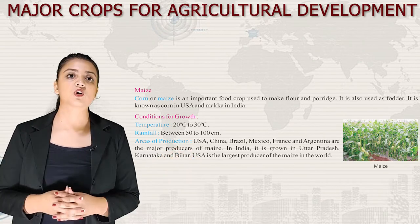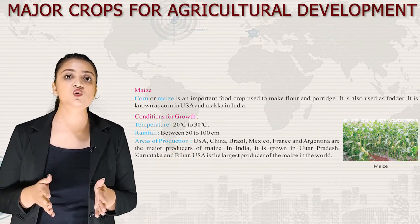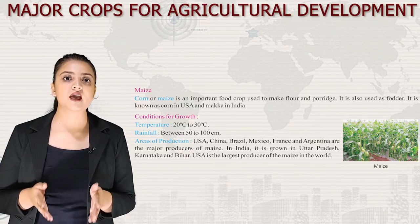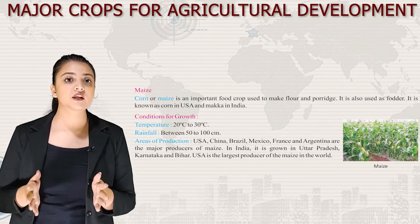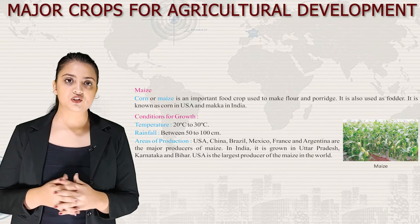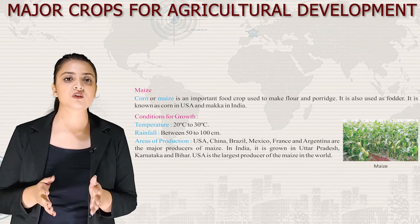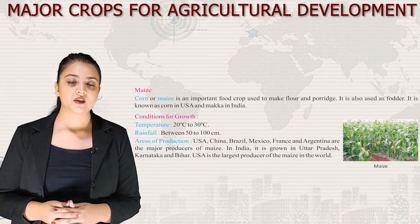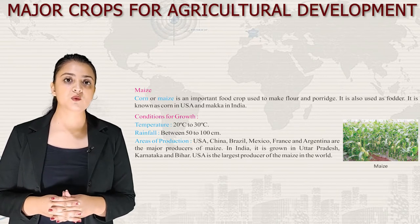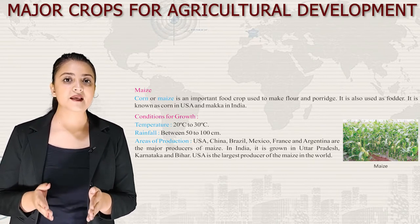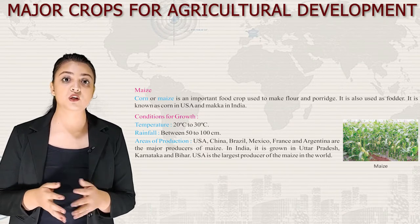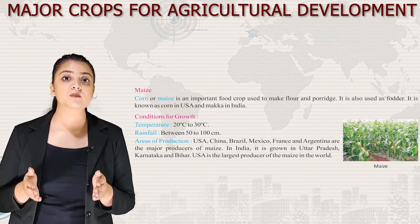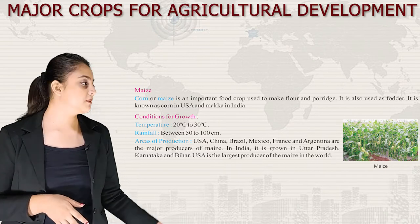Next we have maize. Corn or maize is an important food crop used to make flour and porridge, and also used as fodder. It is known as corn in the USA and Makkah in India. Conditions for growth: temperature 20°C to 30°C and rainfall 50 to 100 cm. Major producers are the USA, China, Brazil, Mexico, France and Argentina. In India, it is grown in Uttar Pradesh, Karnataka and Bihar. The USA is the largest producer of maize in the world.